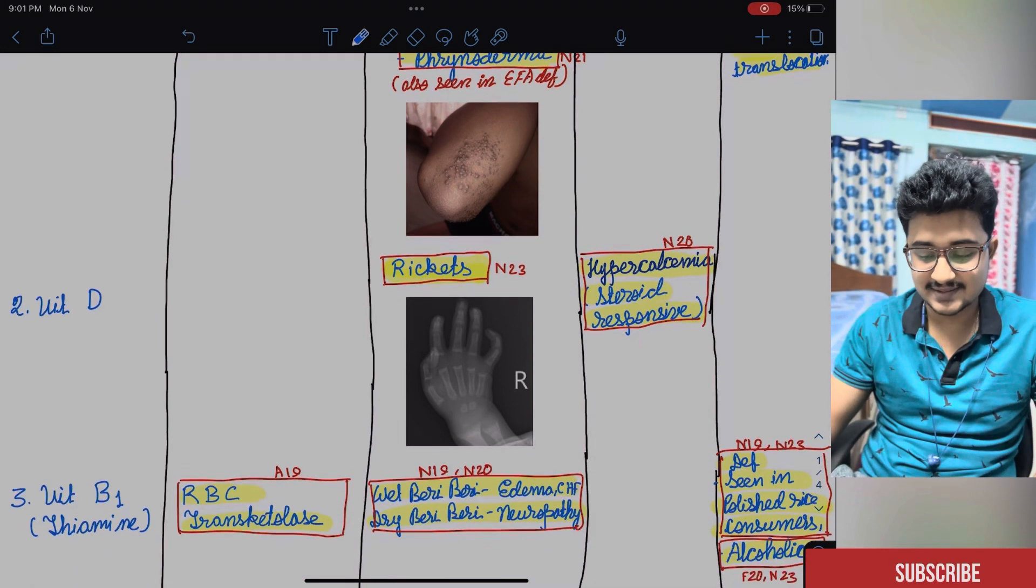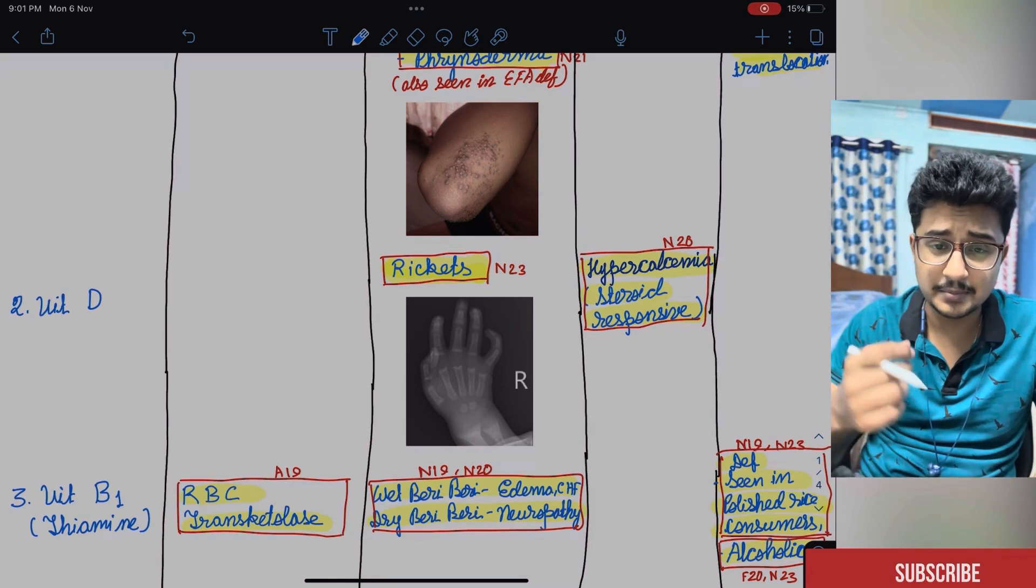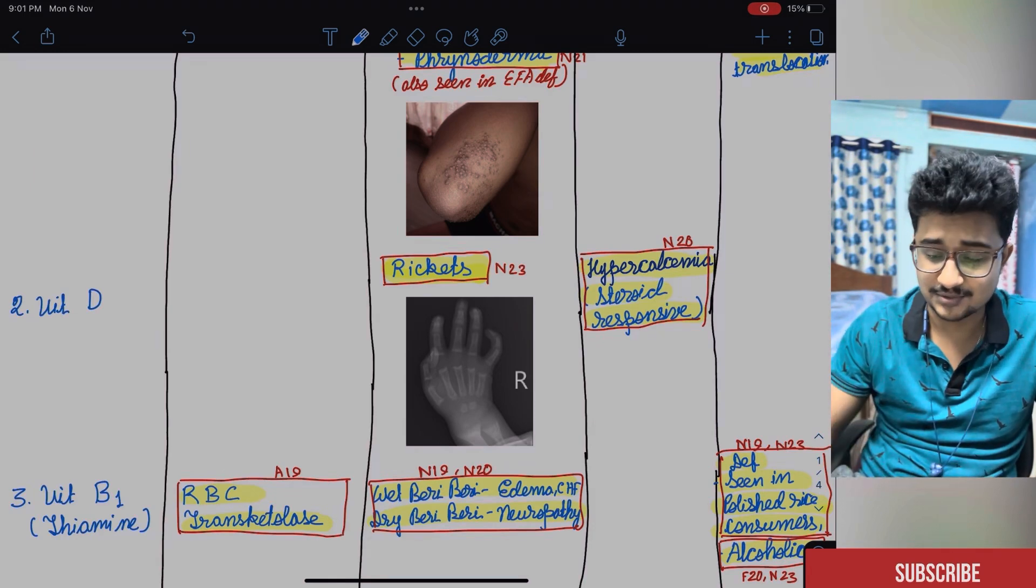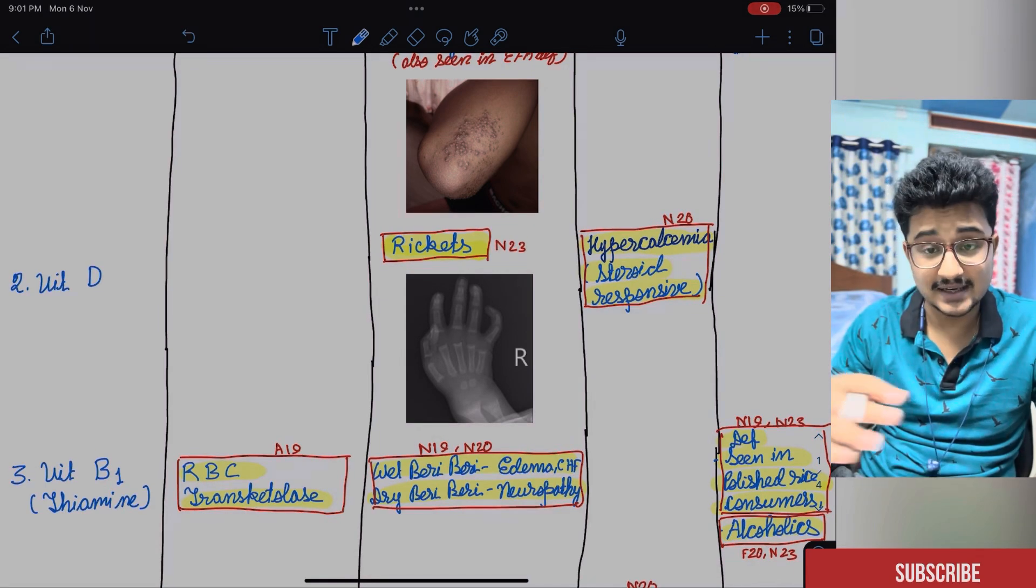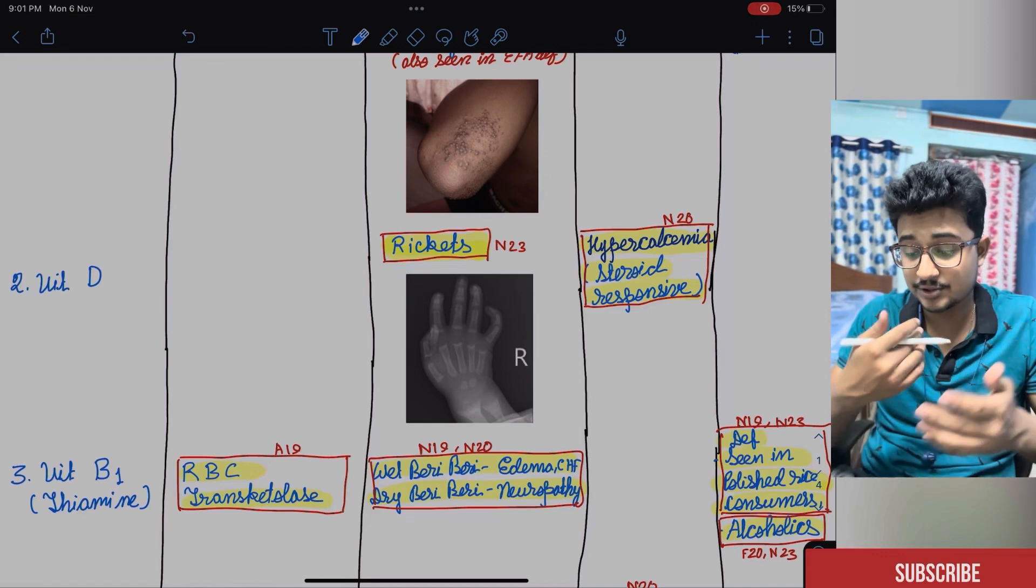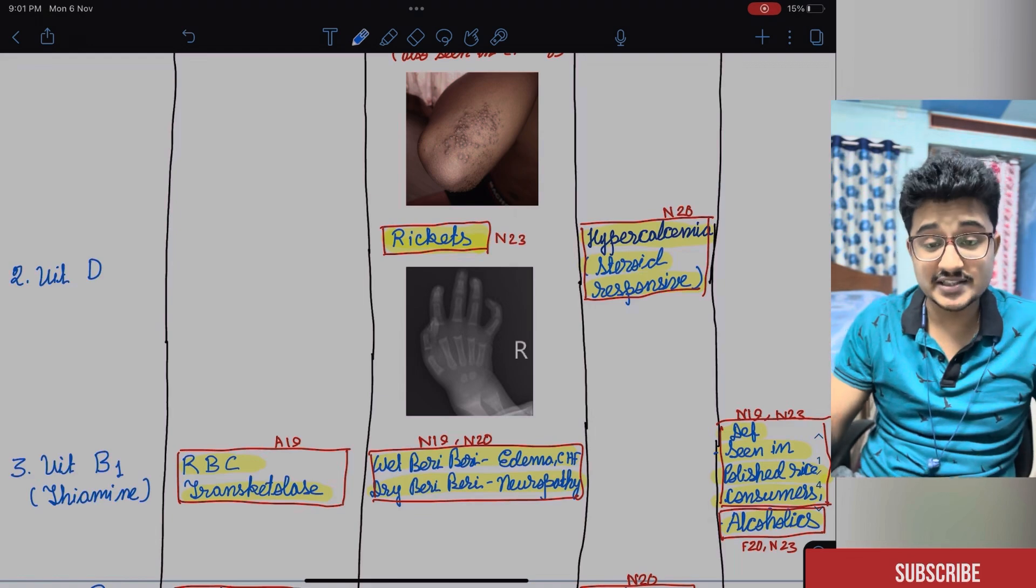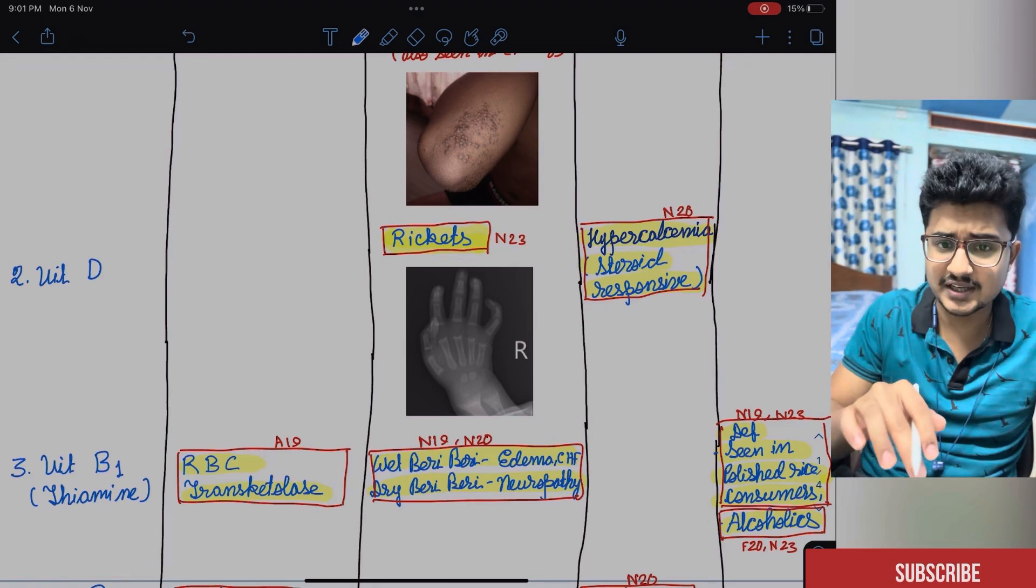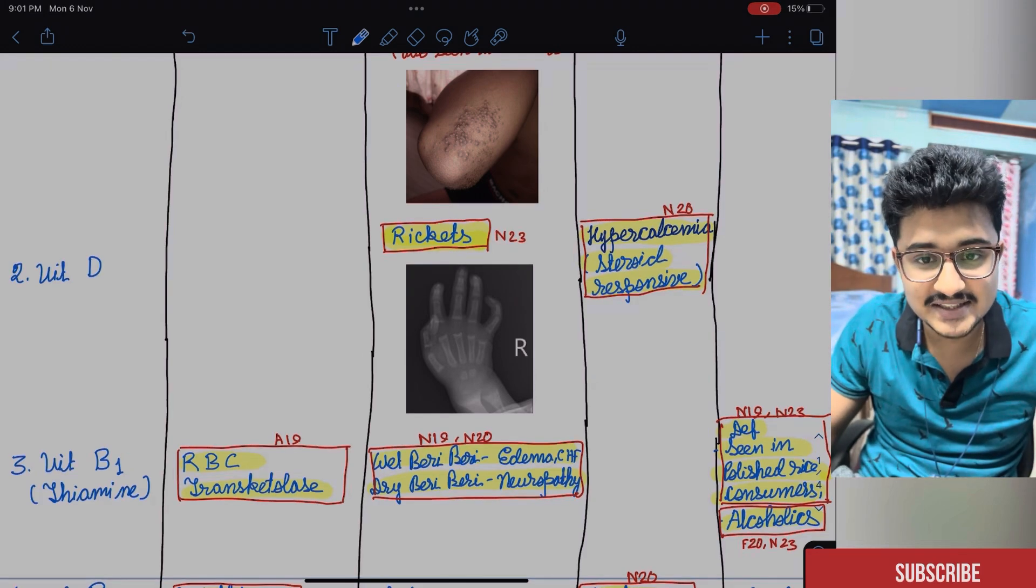Vitamin D. Vitamin D as you know Rickets is seen. This was NITPG 2023. In NITPG 2023 about five questions were asked from vitamins only. Rickets image you should know hypocalcemia. The hypocalcemia in excess vitamin D, hypervitaminosis of D can cause hypercalcemia that is steroid responsive means giving steroid reduces the hypercalcemia. This was asked in NITPG 2020.